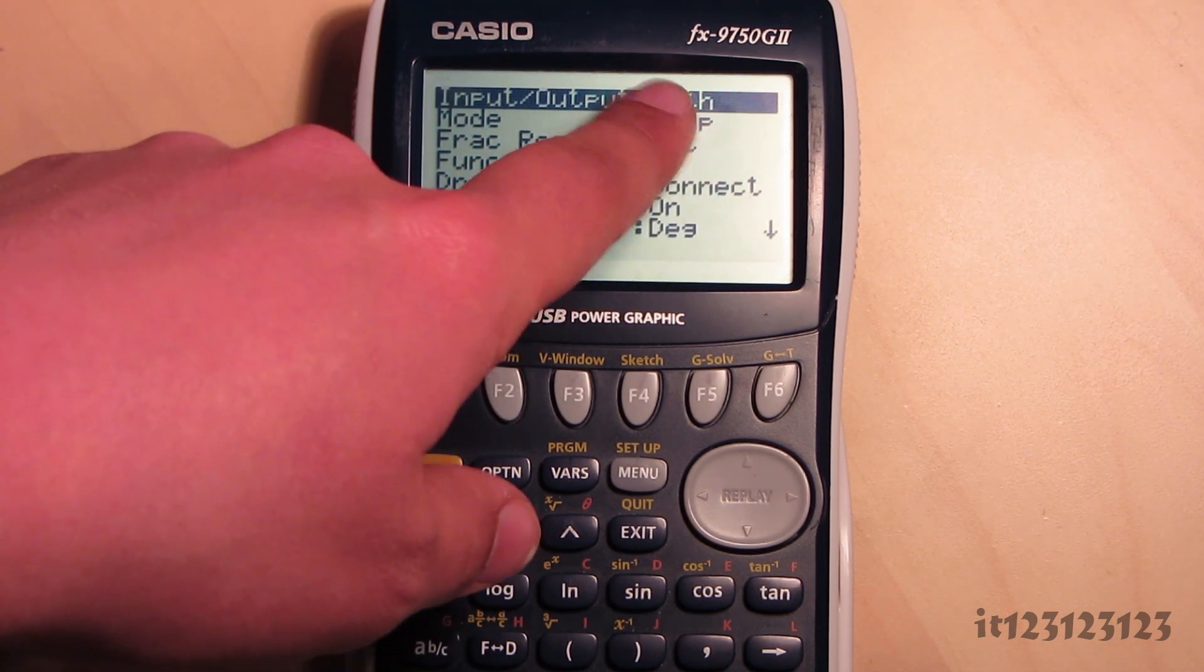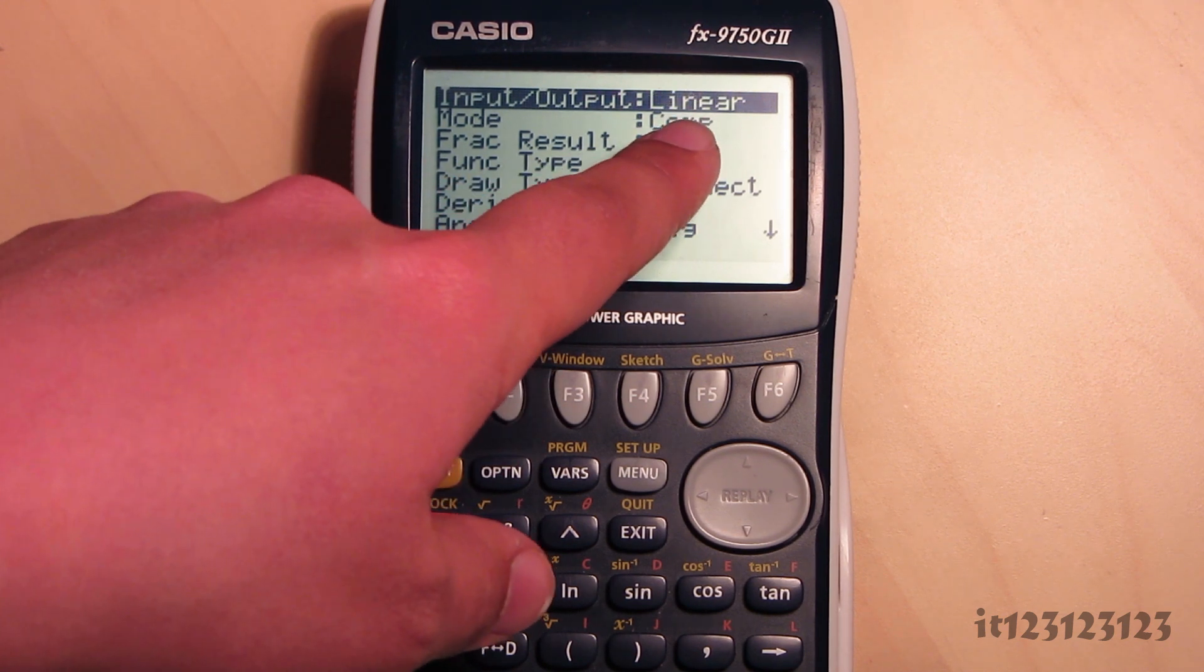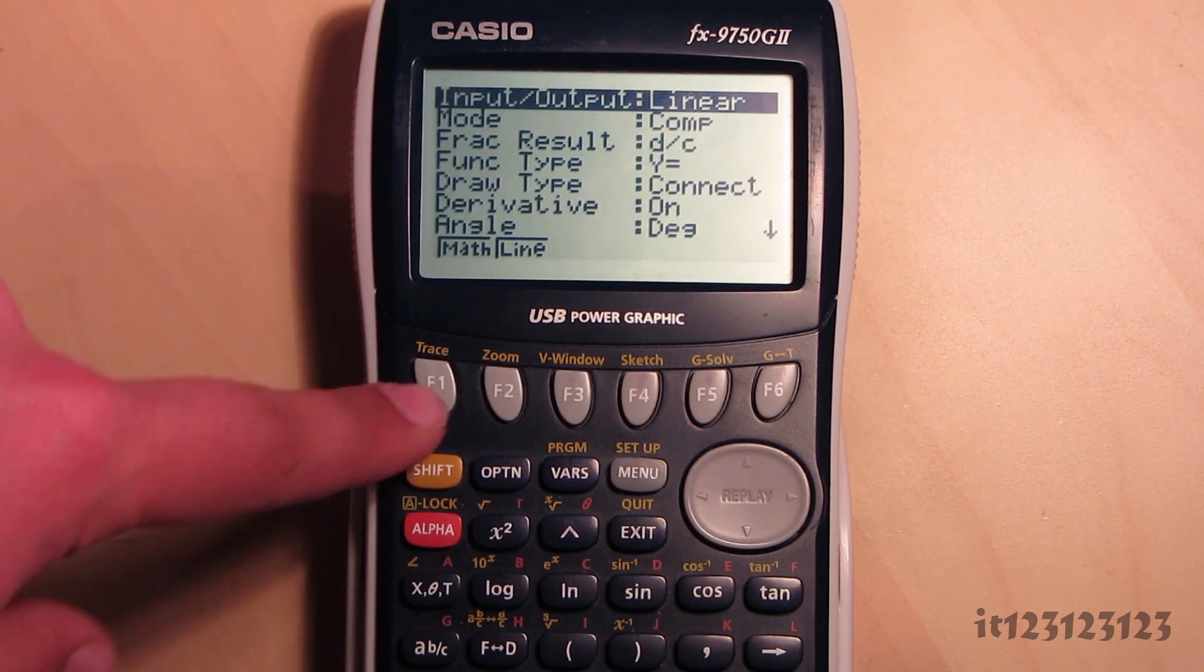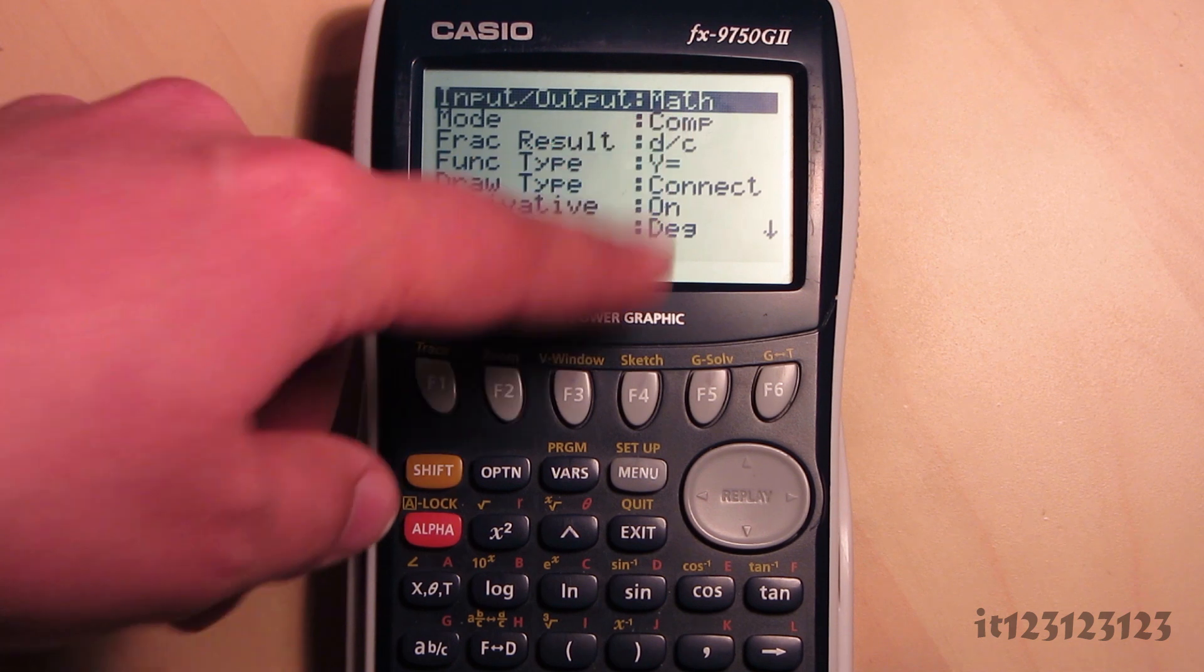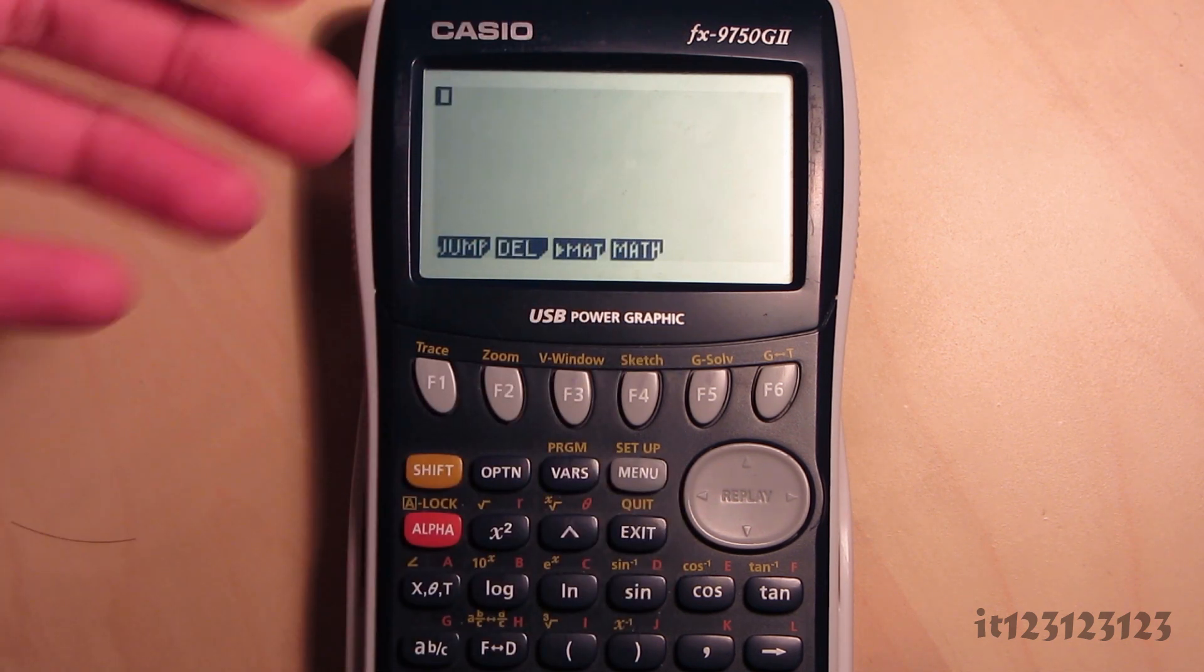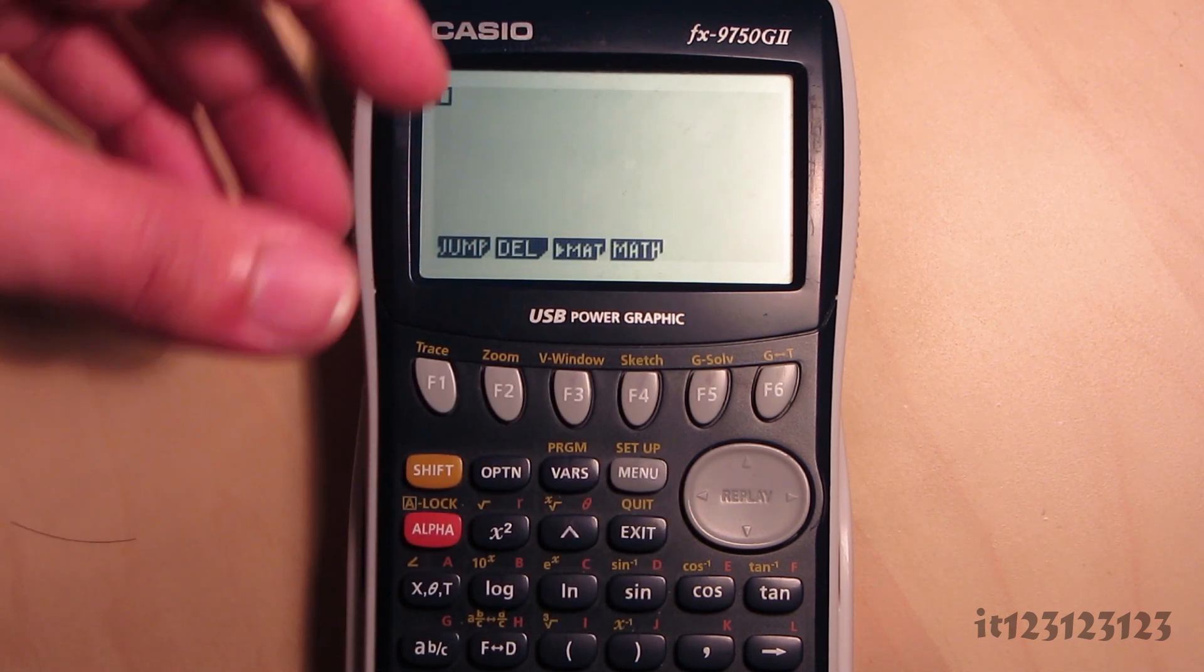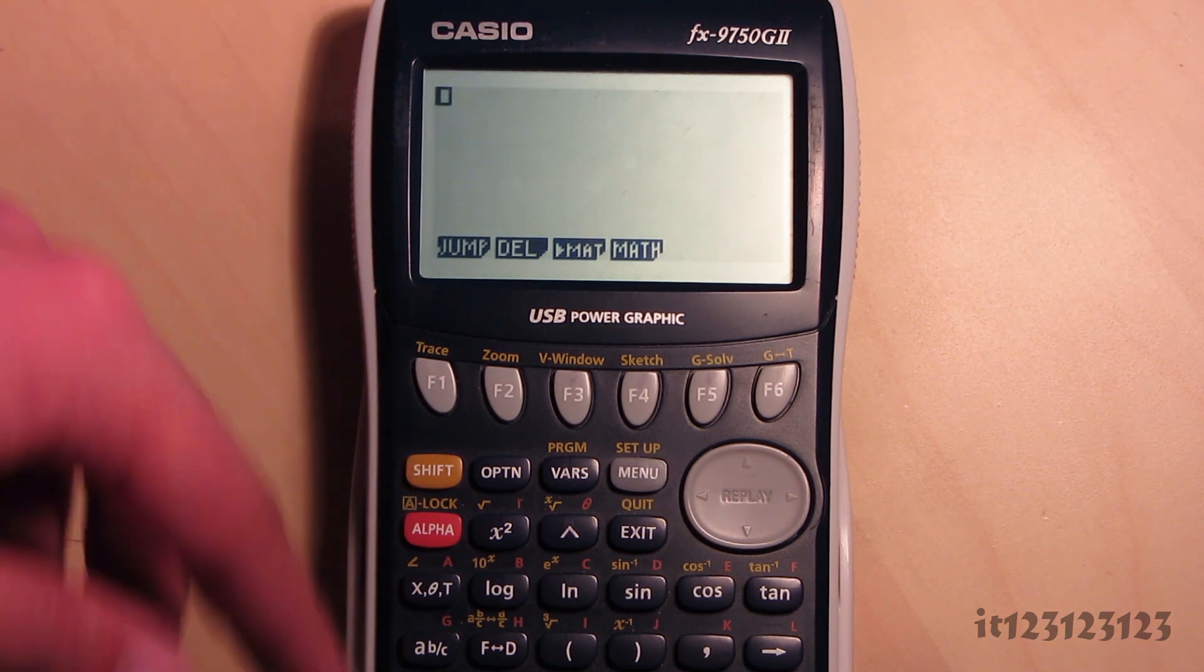You need to change it from, mine's already in math, but you have to change it from linear, and then press the F1 key to change it to math mode. Now this will let you do things like fractions in natural display rather than linear display.